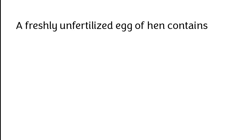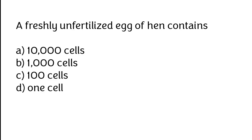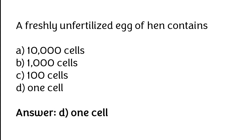A freshly unfertilized egg of a hen contains: A) 10,000 cells, B) 1,000 cells, C) 100 cells, D) 1 cell. The correct answer is option D — a freshly unfertilized egg of a hen contains 1 cell.